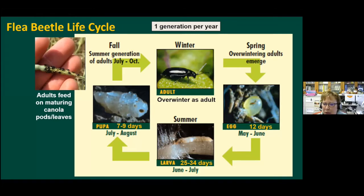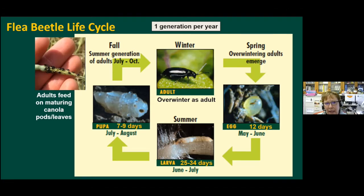The eggs hatch in about 12 days, and the larvae will feed on the secondary root hairs for about 25 to 34 days, depending on temperature. They pass through three different instars or growth stages. Then they'll pupate in the soil for seven to nine days — usually July by then. That's when we get the next generation of adults, the summer generation, which feed on maturing pods and leaves of canola, and also on many weed species like wild mustards.